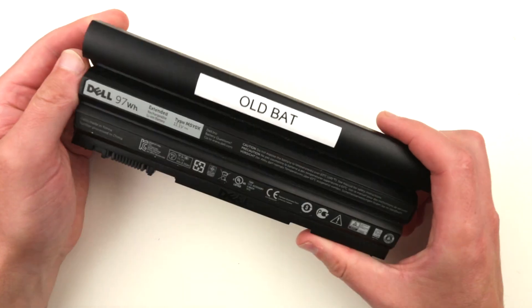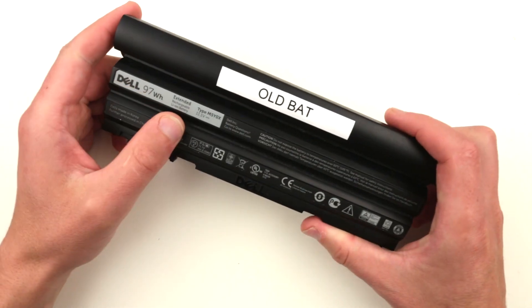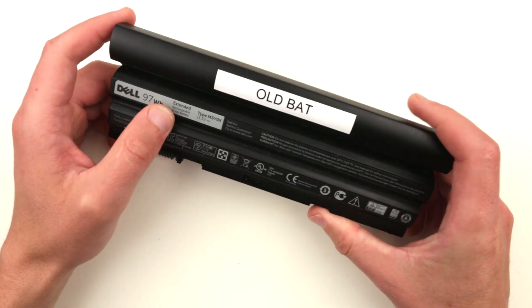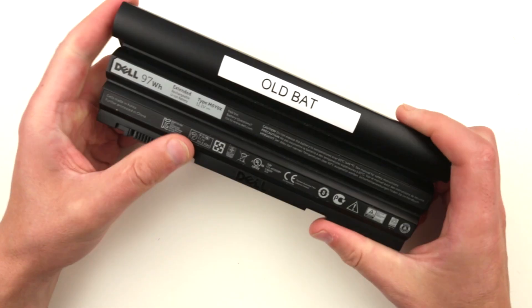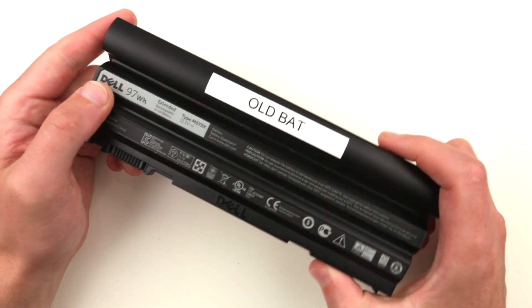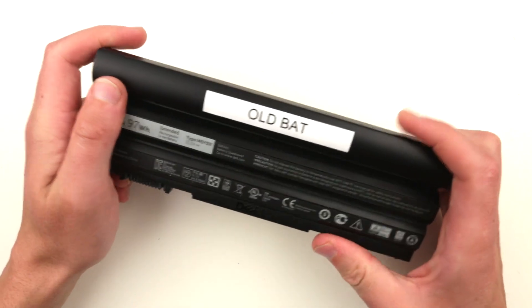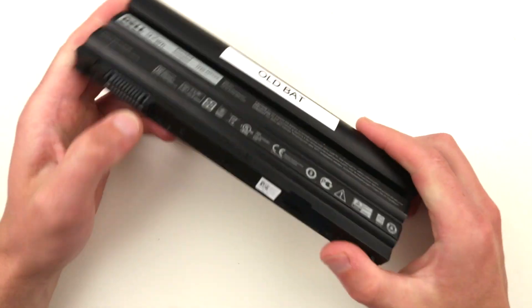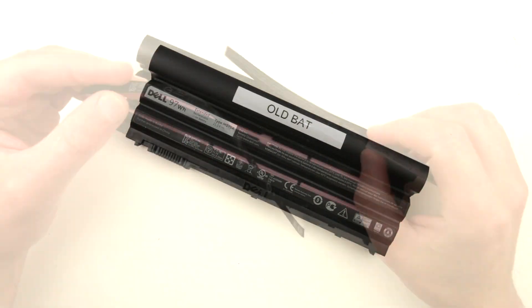I can either tear it down and pull out the good remaining elements, or potentially replace some of the elements and have a working battery. Because of how hard it is to open this battery without destroying the whole thing, I'll probably do it off camera and not make this video super long.